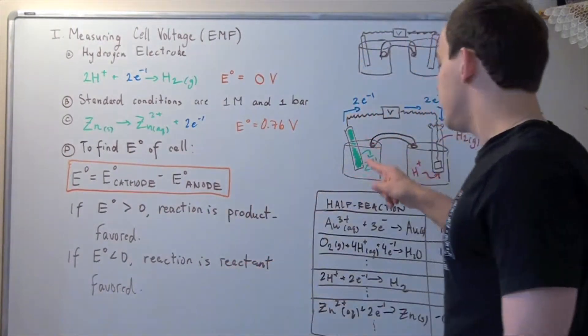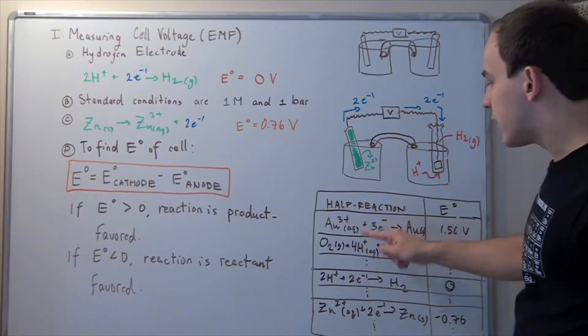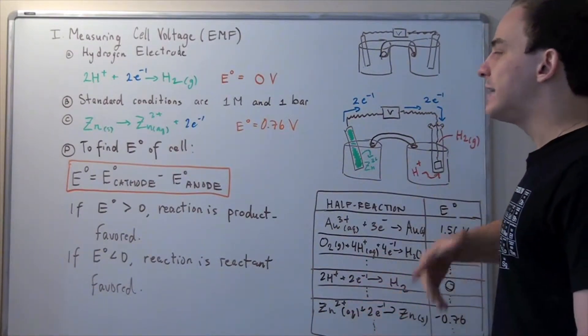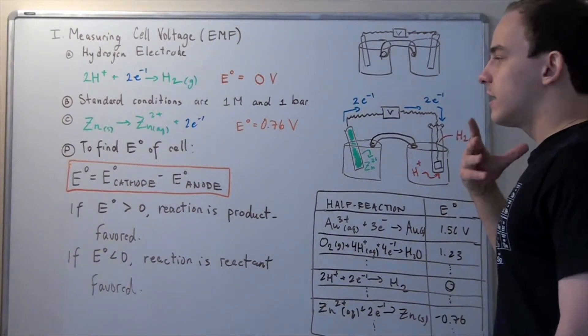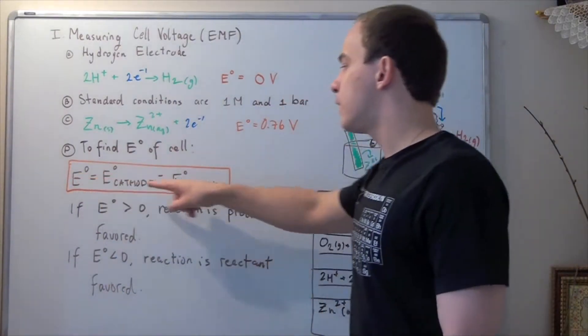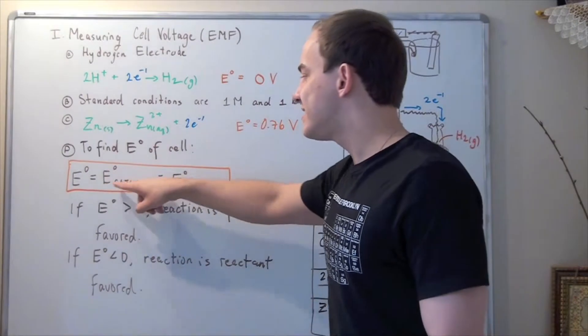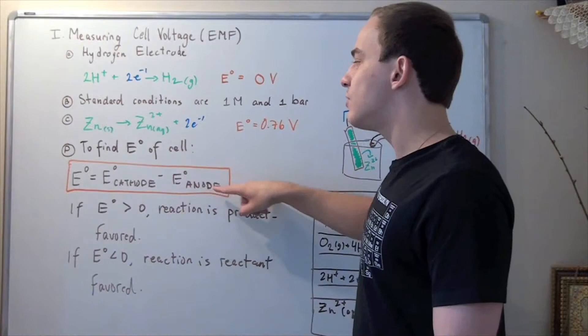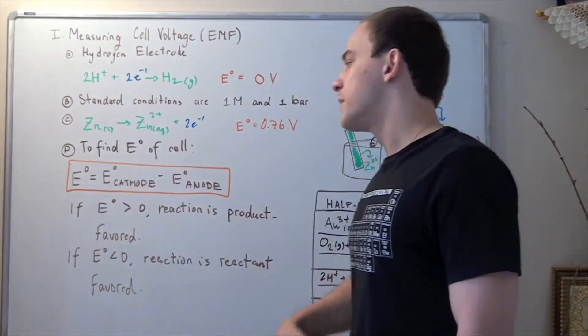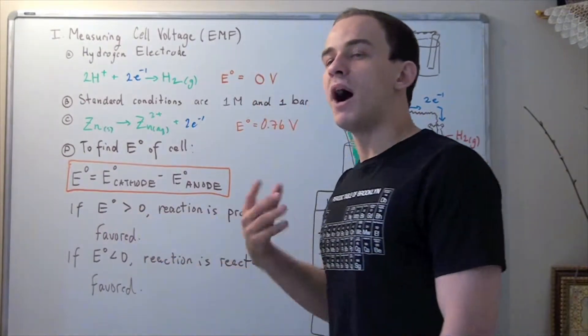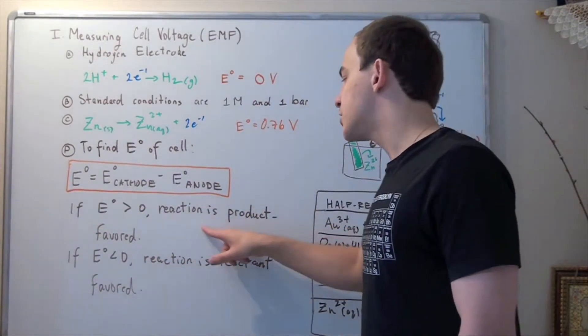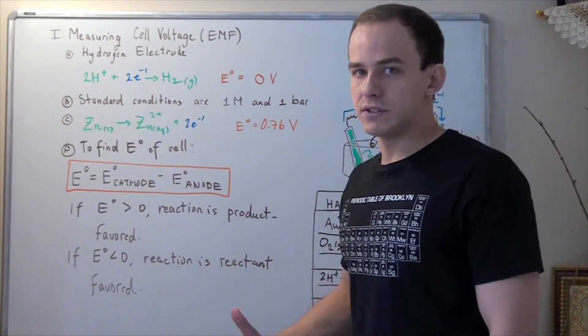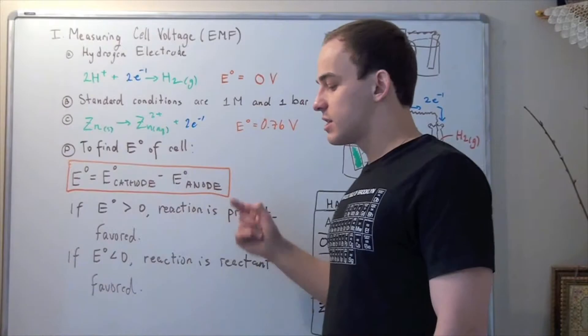Now once we find all these values, we can then play around with these equations. And we can take one half-reaction and mix it with another half-reaction, and we can calculate the corresponding cell voltage using this formula, where this cell voltage corresponds to the cathode, and this corresponds to the anode. And this is the final cell voltage. Now if our cell voltage final is positive, that means our reaction is product favored. If it's negative, that means our reaction is reactant favored. So let's see an example using this formula.